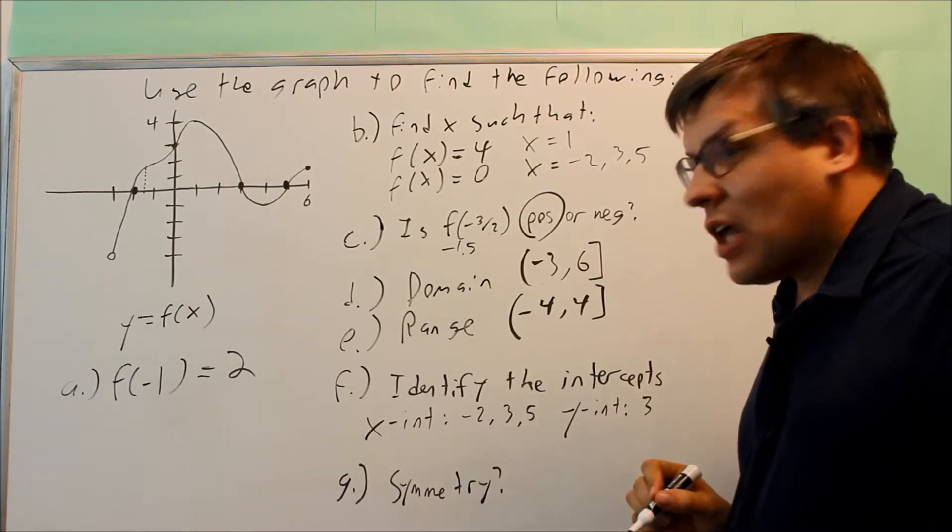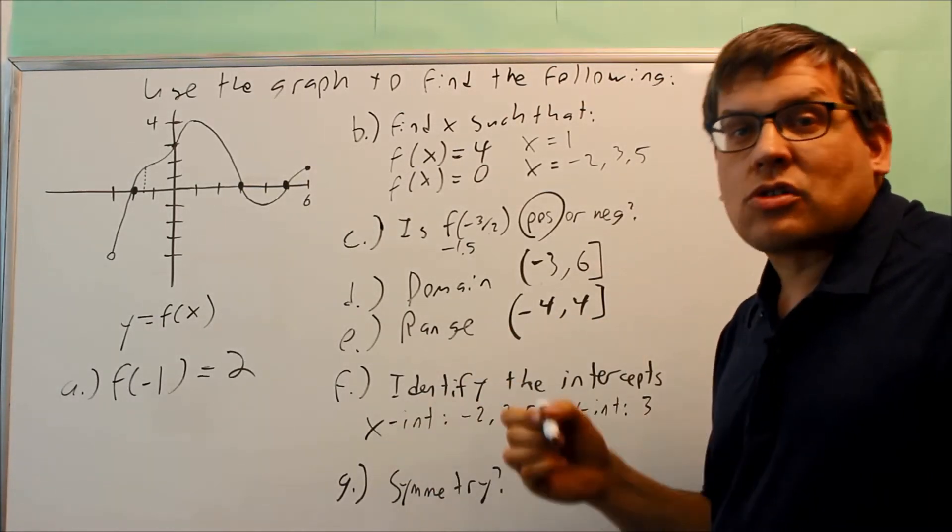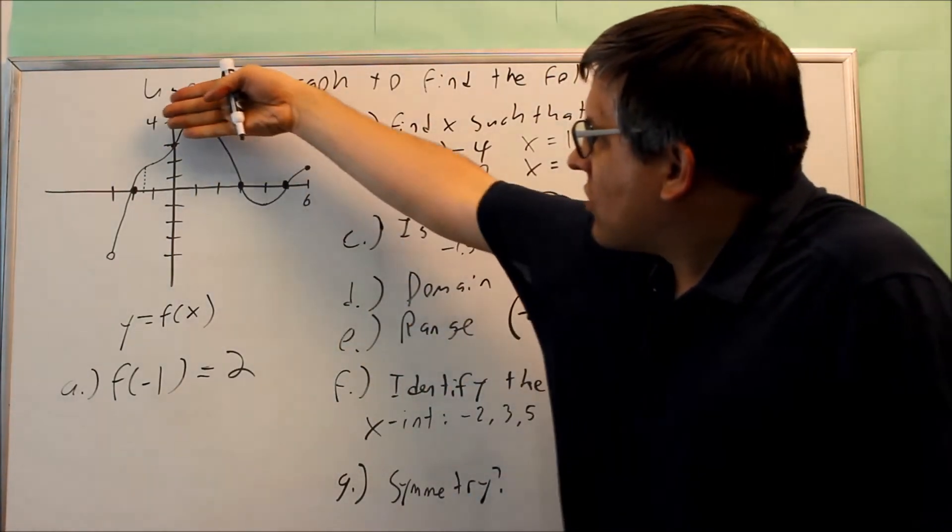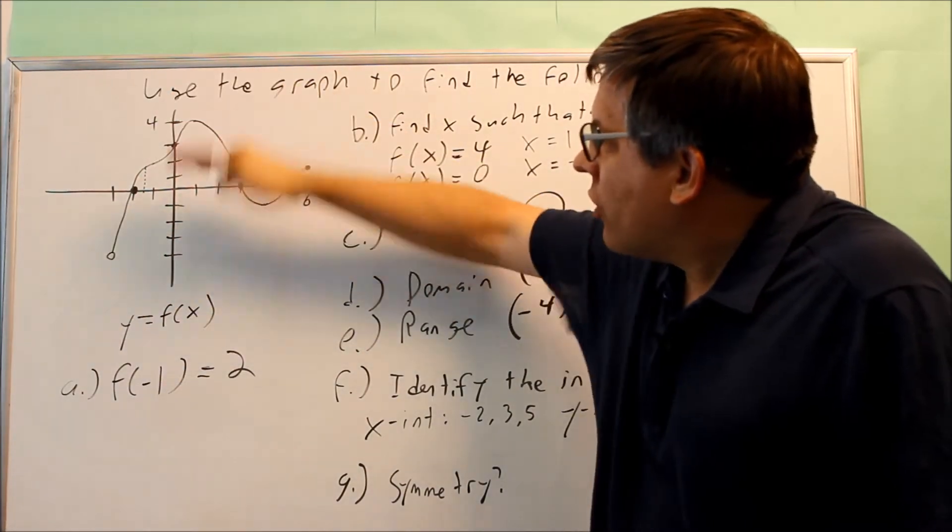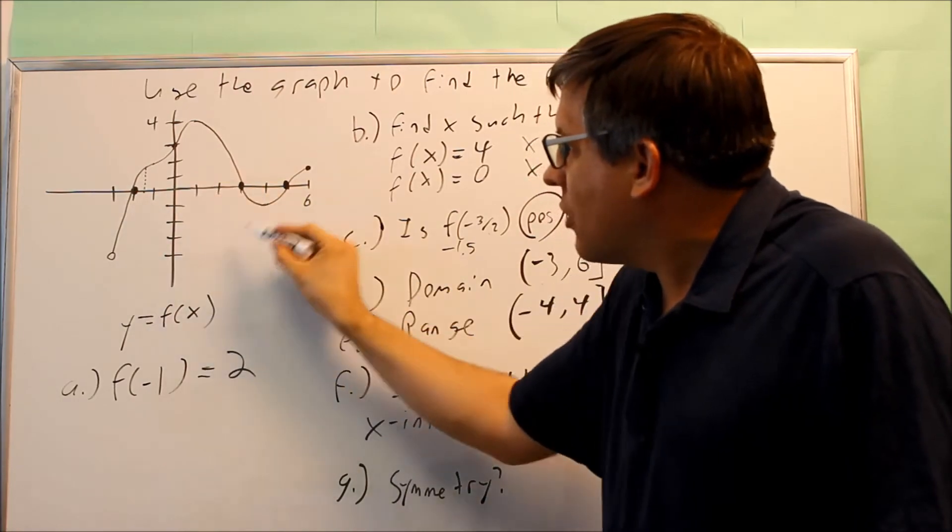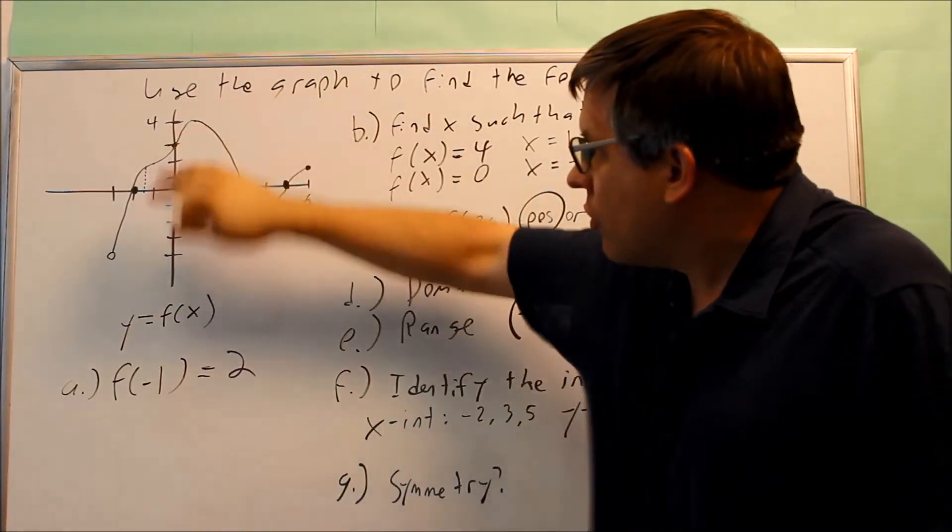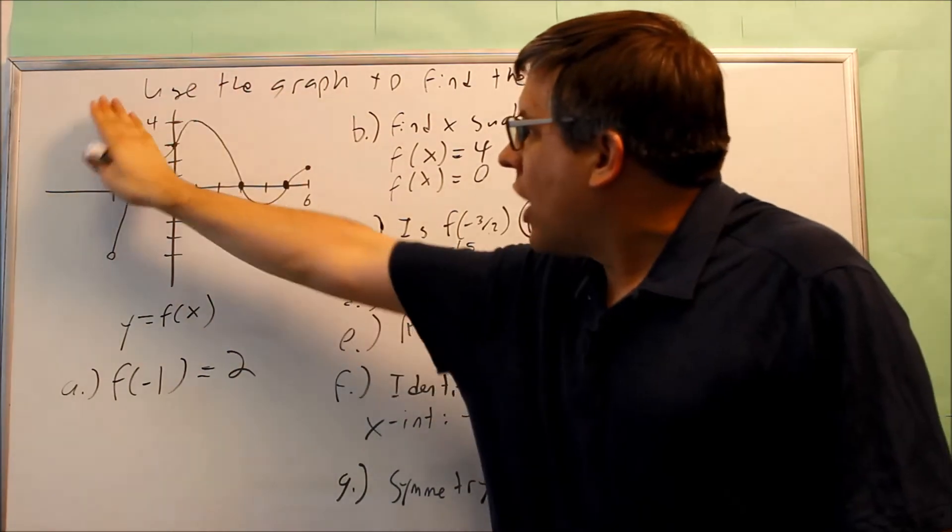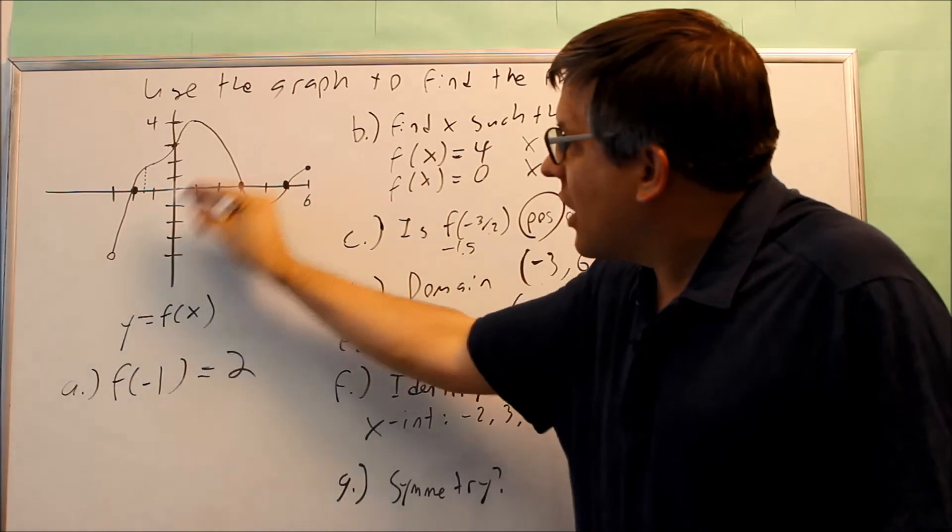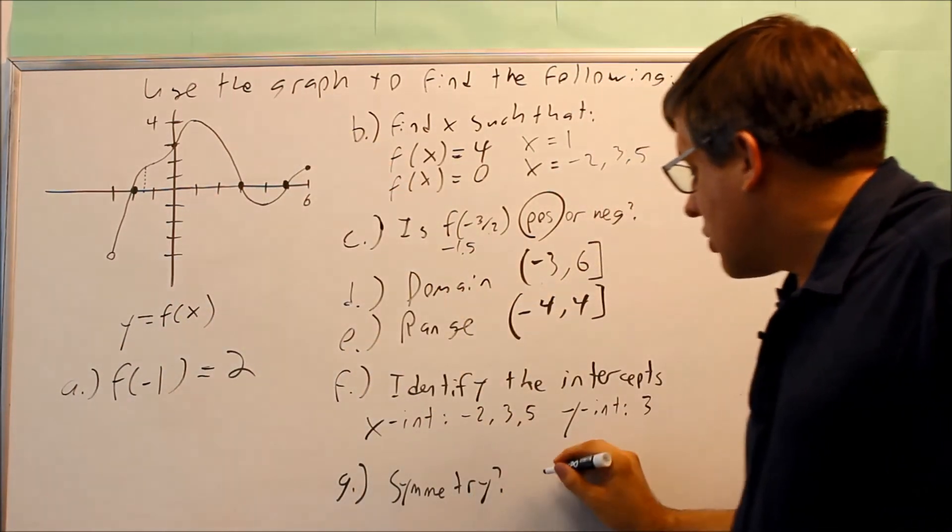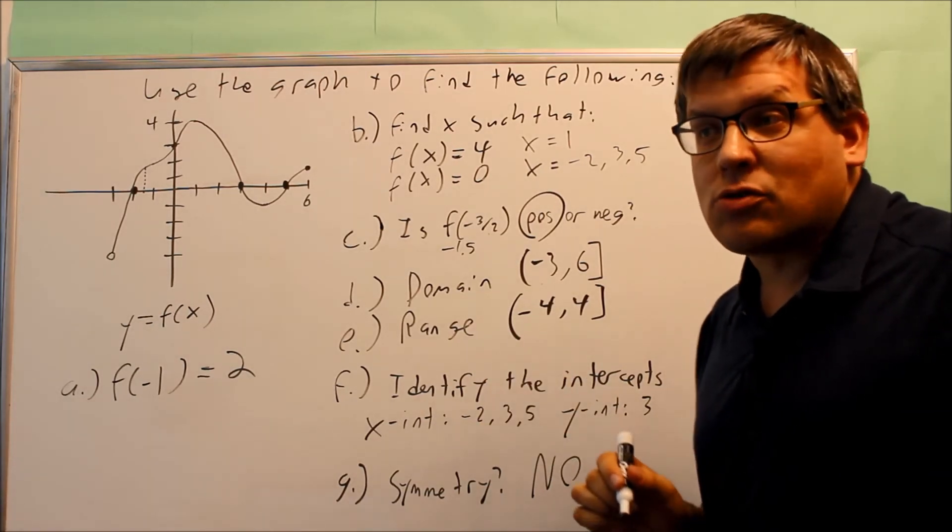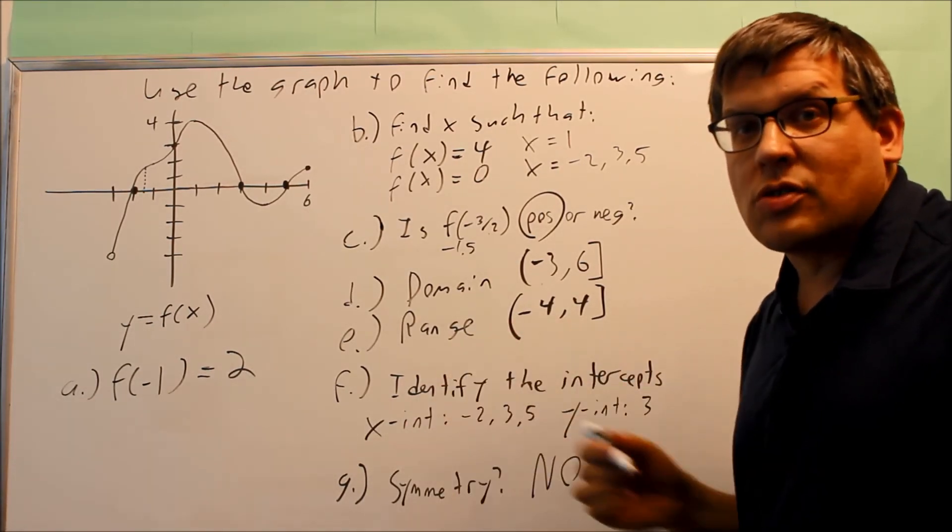The last one to ask, does this have any kind of symmetry? So remember, there's x-axis, y-axis, and origin symmetry. For x-axis, we would have to see if I fold the graph over the x-axis, it's going to lay on top of itself. Well, no, we can't do that because the graph will not lay on top of itself there when we fold it over. If we fold it over the y-axis, I'll be checking for y-axis symmetry. That doesn't line up either. I don't have the same thing in opposite quadrants. So it doesn't have any kind of symmetry. So does it have symmetry? No, it doesn't have any kind of symmetry. No x-axis, no y-axis, or no origin symmetry.